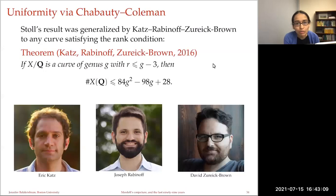Stoll's result was generalized by Katz, Rabinoff, and Zureick-Brown to any curve satisfying the rank condition: under the same hypothesis of rank ≤ g − 3, there is a quadratic bound on the number of rational points on the curve. They used ideas from tropical geometry to extend what Stoll did explicitly for hyperelliptic curves.